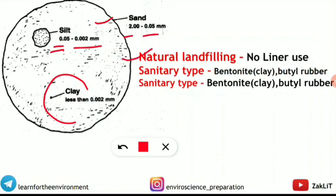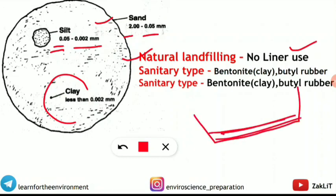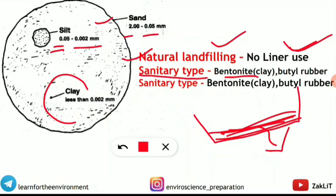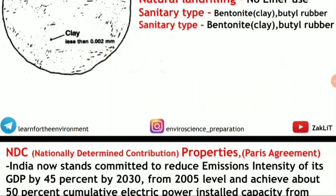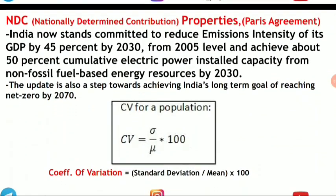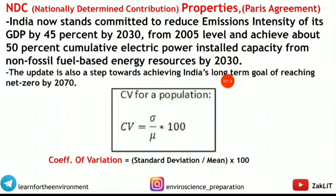A question about landfilling — possibly in matching form — covered liner usage. A liner prevents leachate from passing through soil and contaminating groundwater. In natural landfilling, no liner is used. In sanitary landfilling, bentonite clay or butyl rubber are used as liners.